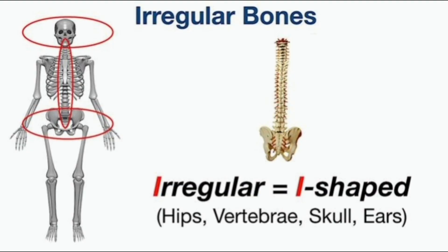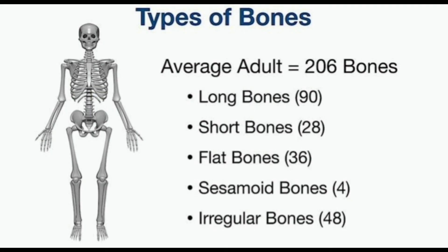Let's take a quick recap. For long bones, remember the L found in limbs and clavicle. For short bones, remember sprain because you can sprain your ankle and wrist. For flat bones, remember fault because it serves as a form of protection — the ribs, skull, and scapula. For sesamoid bones, remember the sesame seed or the P-shape standing for pisiform and patella. For irregular bones, remember the I that starts irregular — found in the hips, spine, and parts of the skull and ears.